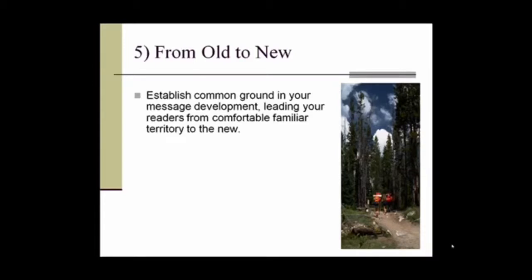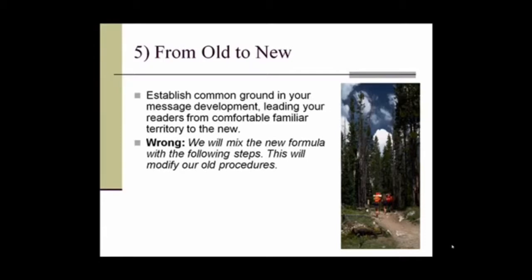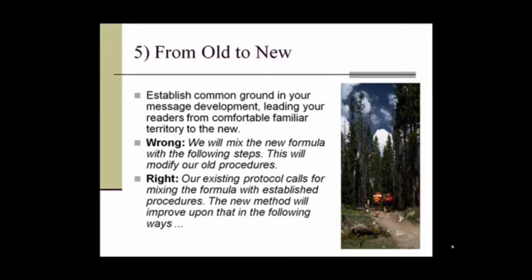Tip number five is to lead your readers from old information to new information. We can do that by establishing common ground, leading readers from comfortable, familiar territory to new ground — through old familiar information, shared experiences, and common reference points. People are frequently reluctant to try or learn something new, so rather than hit them right off with new information, we work into it with something more comfortable and familiar. Wrong example: 'We will mix the new formula with the following steps. This will modify our old procedures.'